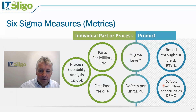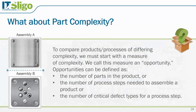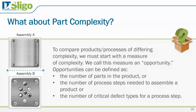DPMO is a very valuable metric because it accounts for part complexity. For example, would it be fair to set the same quality goal for Assembly A and Assembly B? The answer is no, but typically organizations do — setting maybe 95% or 99% for both. Assembly A is much simpler: it has four screws and a base plate, so five parts. Assembly B has 11 screws and a base plate — 12 parts — and far more opportunities for error, including mixing up screw types.